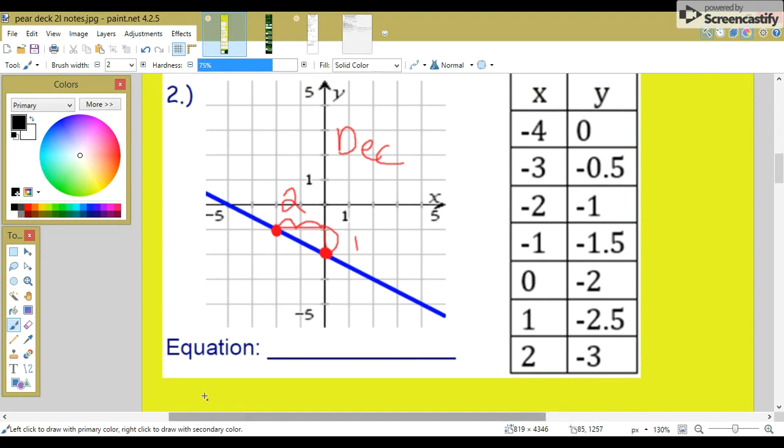That means our slope m is negative because decreasing, and the rise is one, the run is two. So our slope is negative one-half. Our b, our y-intercept, is negative two. So your equation is y equals mx plus b. Y equals negative one-half x minus two.